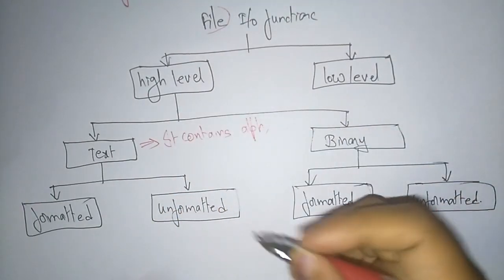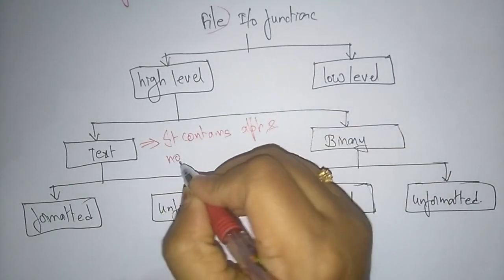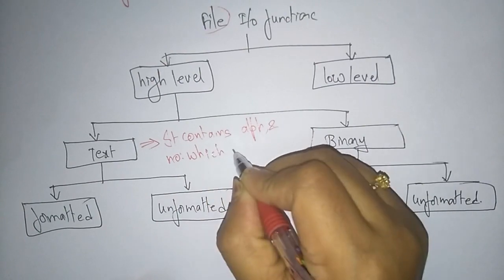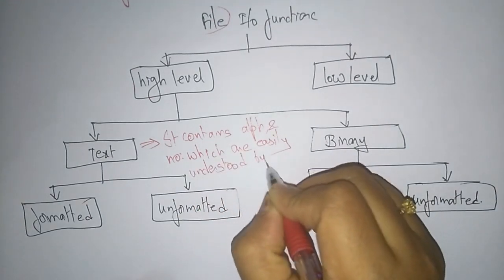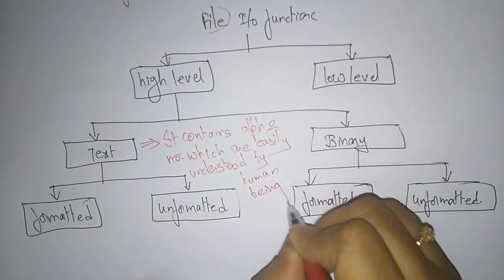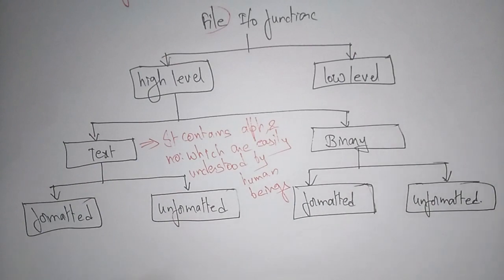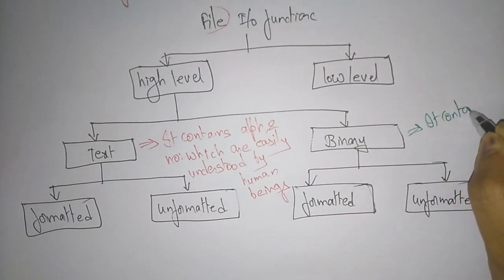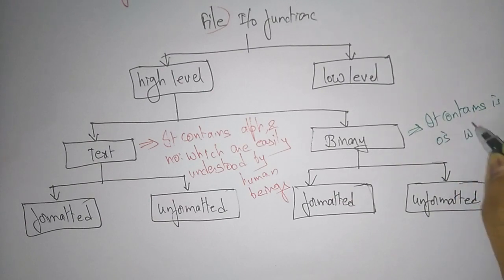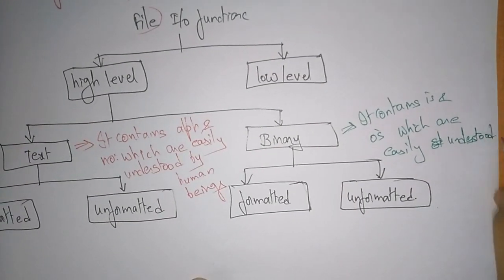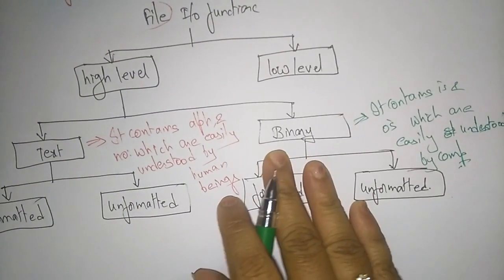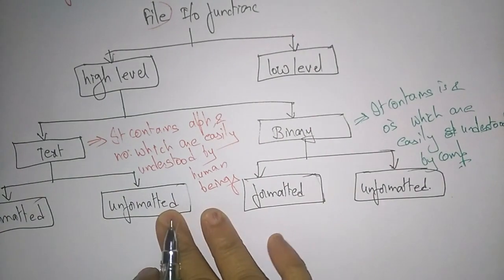Text contains alphabets and numbers which are easily understood by human beings. Binary is nothing but it contains 1s and 0s which are easily understood by computers. So the binary information is easily understood by computers, whereas the text is easily understood by human beings.